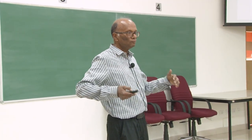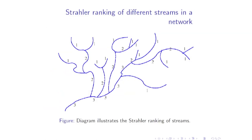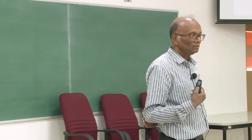Here is a picture of Strahler ranking. Two rank-1 rivers join to form rank 2. A rank-1 joining rank 2 stays rank 2. Two rank-2 rivers joining become rank 3, and so on. The advantage is that this is very robust and easy — you don't have to go to each river and measure the flow. Just look at the map and you can decide the rank.